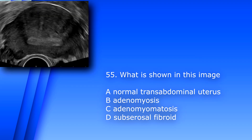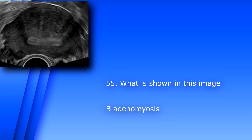Question 55. What is shown in this image? A. Normal transabdominal uterus, B. Adenomyosis, C. Adenomyomatosis, D. Subserosal fibroid. The answer is B, Adenomyosis. This is a transvaginal image, so A is not your answer. When two answers look very similar, typically one of them is going to be the answer. Adenomyomatosis is when biliary crystals get stuck in the gallbladder wall in the Rokitansky-Aschoff sinuses, so adenomyosis is your answer.